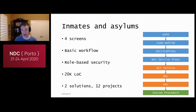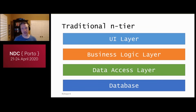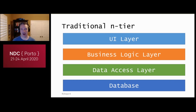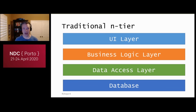I didn't go to school for computer science — I had an engineering degree. When I first got out and had my first real application, I needed to learn how to build systems. What I was taught was that you build applications with an N-tier architecture — usually three or four tiers: a UI layer, a business logic layer, a data access layer, and the database. I built and shipped applications with this exact structure and it seemed to work okay, at least for the small projects I was working on.